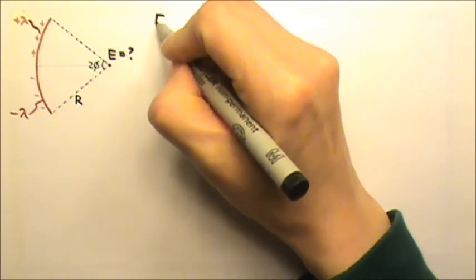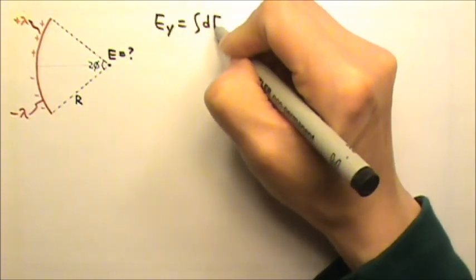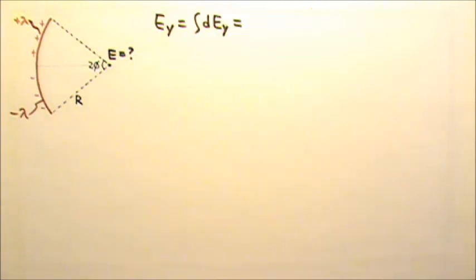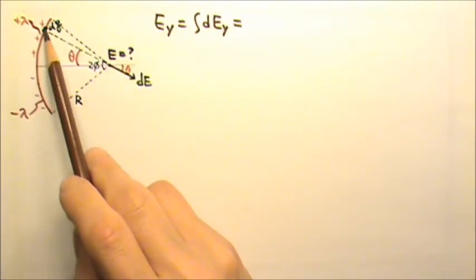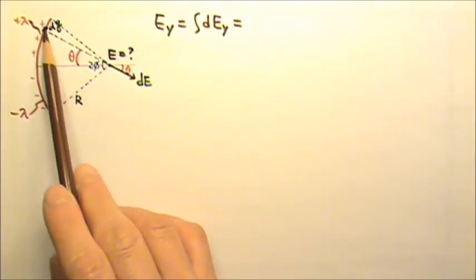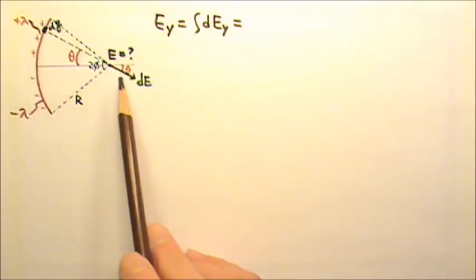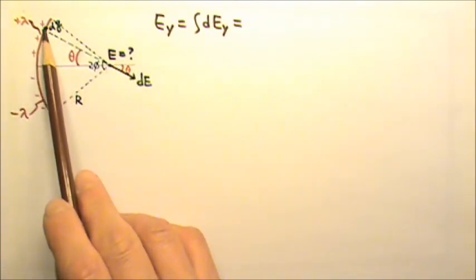So we want to find the electric field's y component. So we have to integrate and find the dE's y component. Let's say this is my point charge dQ. The field produced by that positive dQ comes out of the charge. That's the dE produced by the point charge dQ.